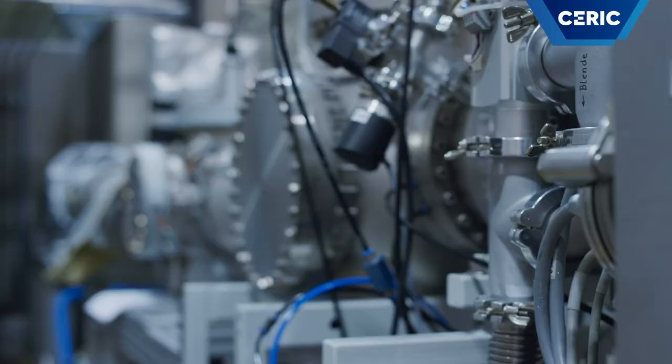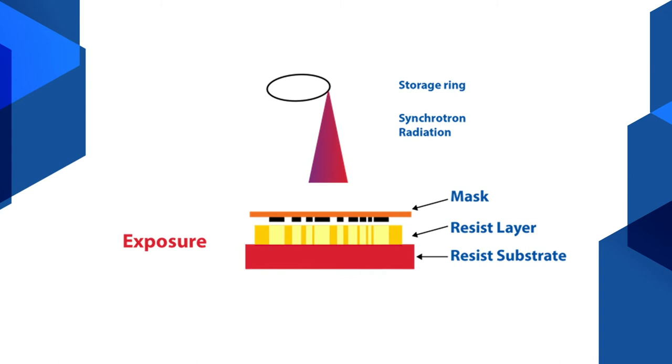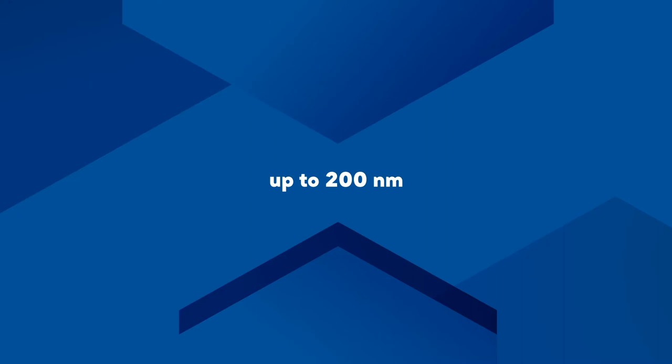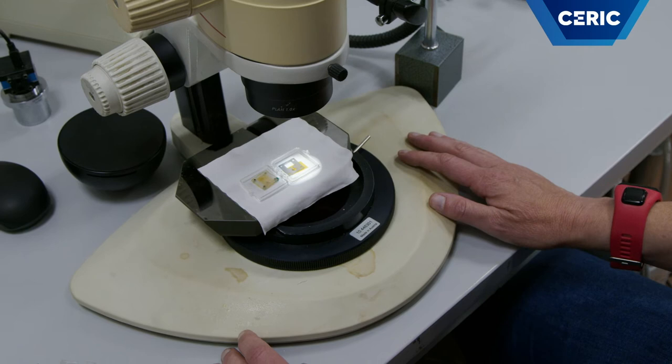Therefore, if we put an X-ray mask with a pattern between the X-ray source and the sample, we are able to transfer the pattern from the mask to the material with very high precision — up to 200 nanometers with a thickness of 100 microns. Since we are limited only by diffraction of X-rays, we can obtain very straight sidewalls with optical quality.